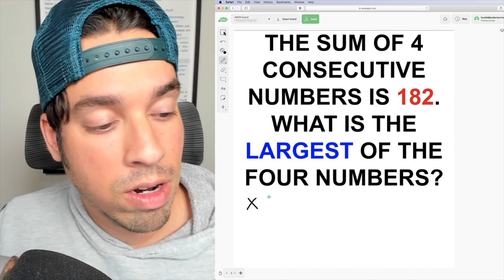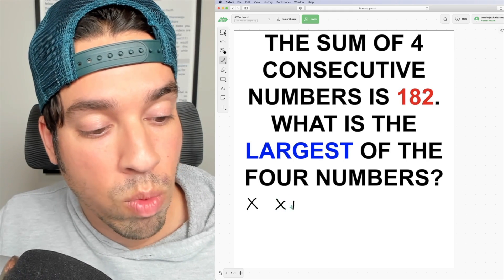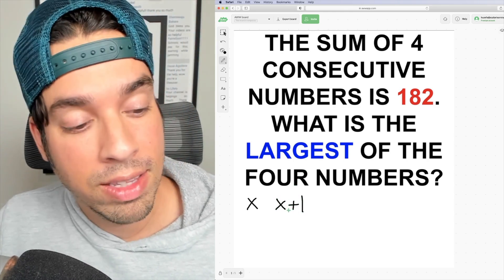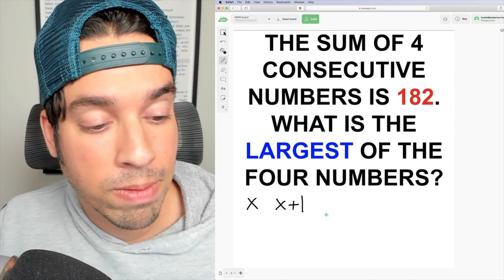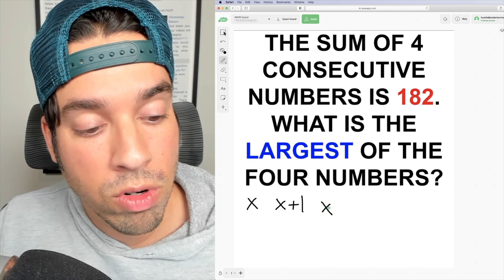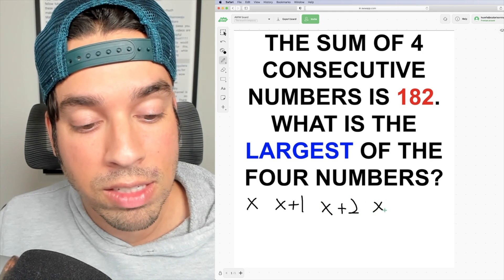The next biggest number, since these are all consecutive numbers, has to be X but one more than X, right? Like if X is 5, this one would represent 6. If X is 10, this would represent 11. The third number would be X+2, and of course the fourth number would be X+3.